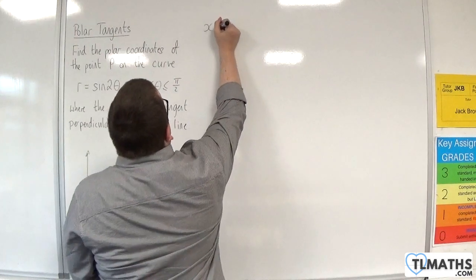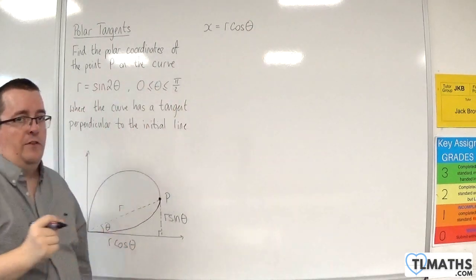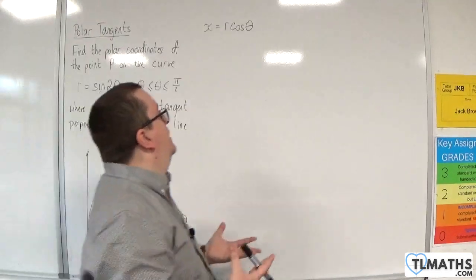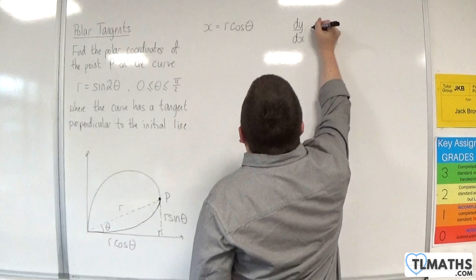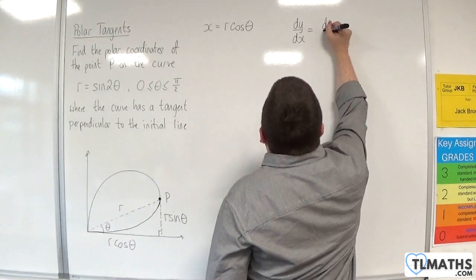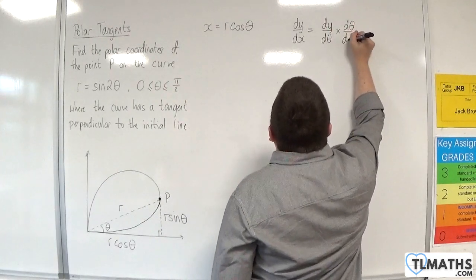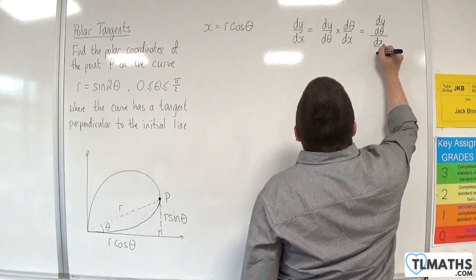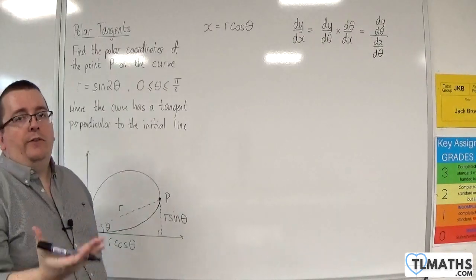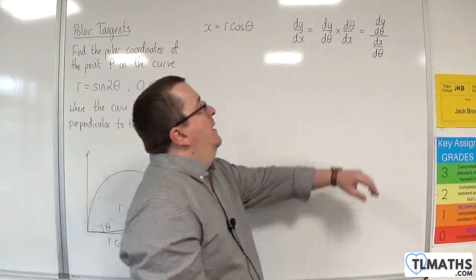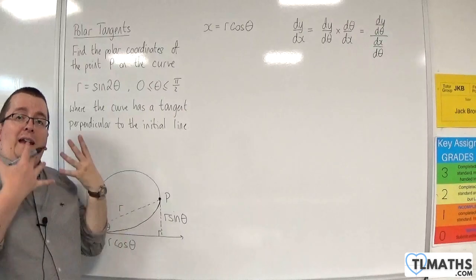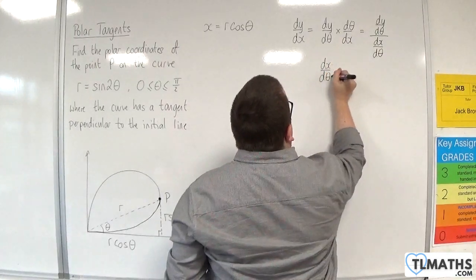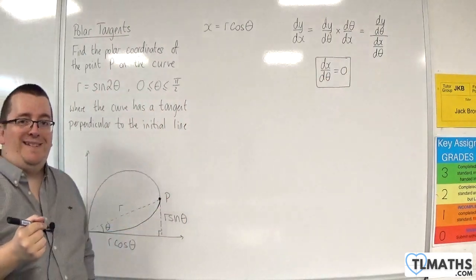We know X equals R cosθ. From the previous videos, we know we're going to be working with dy/dx, since we're looking at tangents to the curve. Using the chain rule, dy/dx equals dy/dθ times dθ/dx, which we can rewrite as dy/dθ over dx/dθ. For tangents parallel to the initial line, dy/dθ equals 0. But for perpendicular to the initial line, we need dx/dθ to equal 0.